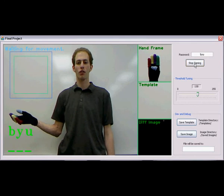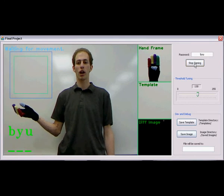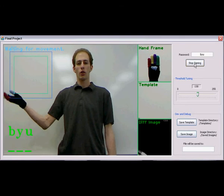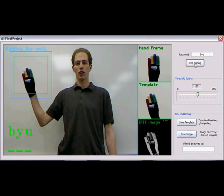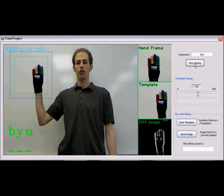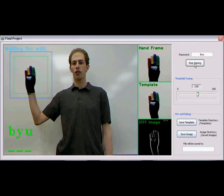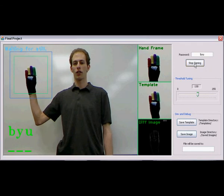When the program starts, it waits for movement within the box. The hand will move in. I'll try and make the right sign. Once it sees the movement, it will wait for stillness to know that it can start recognizing the sign.